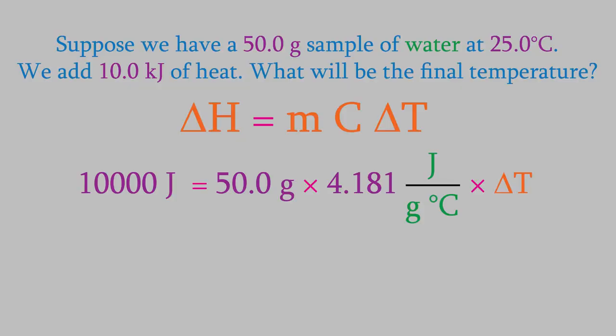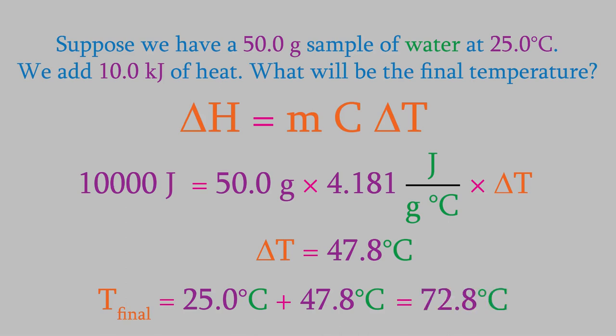When we put these values into the equation and solve for delta T, we get 47.8 degrees. However, notice that's not our final answer. The question asked what the final temperature is, but what we just found was delta T, the change in temperature. Our water started at 25.0 degrees, and we just found out that the temperature change was 47.8, so the final temperature will be 72.8 degrees C.